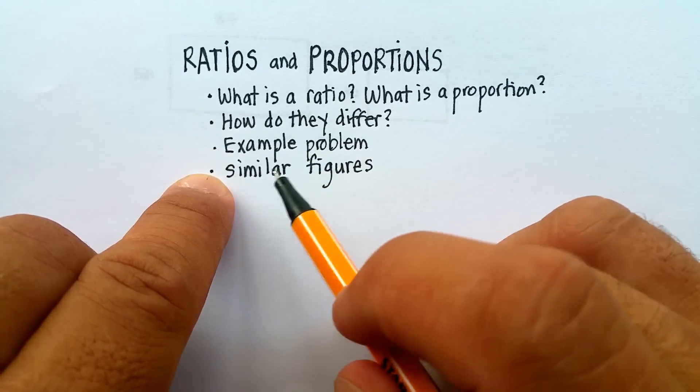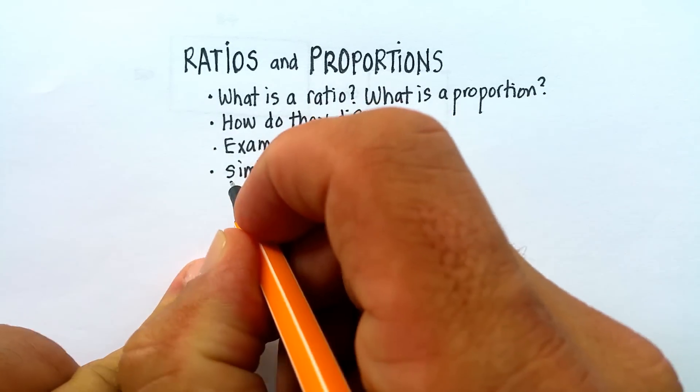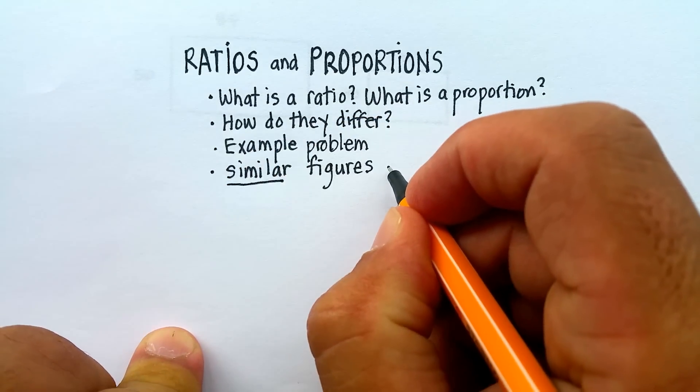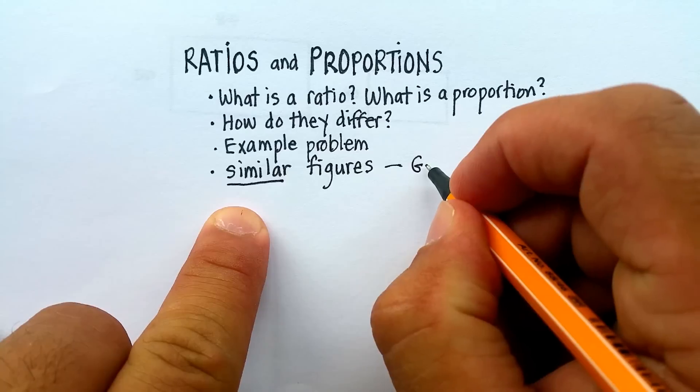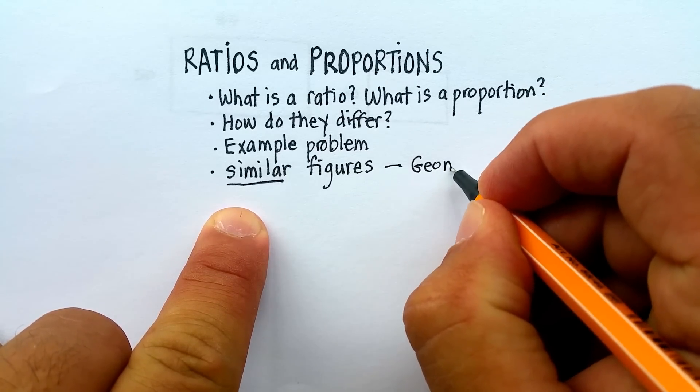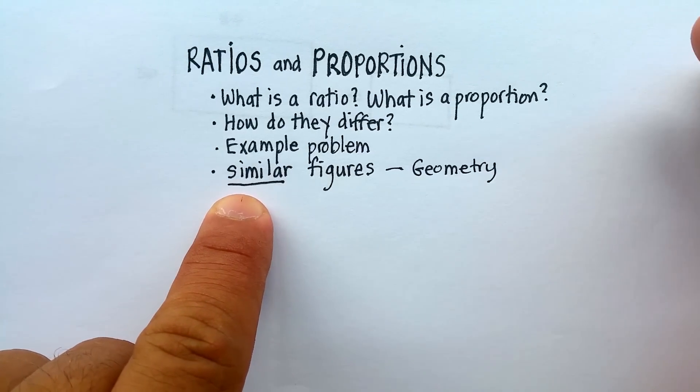And then we'll do an example problem, and then we're going to talk specifically about a word that I want you to know, especially for this particular class of geometry. It's called similar figures. So this is specifically if you are studying geometry. Similarity is a concept that you should know.